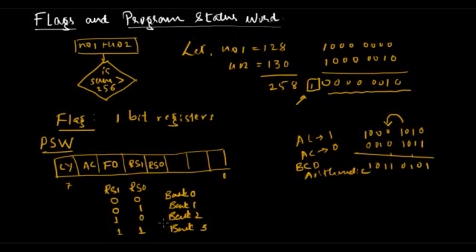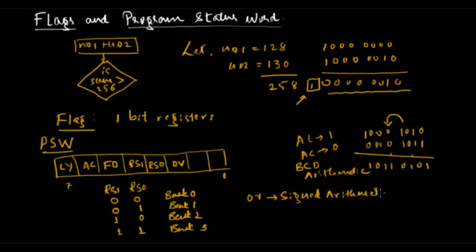Then we have the overflow flag, OV. The overflow flag plays a very important role in signed arithmetic. We will consider the overflow flag in detail when we cover signed arithmetic. For now, just know that we have an overflow flag. The next bit is left unused, reserved for future purpose.